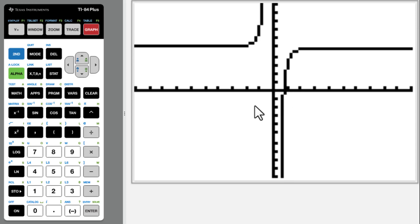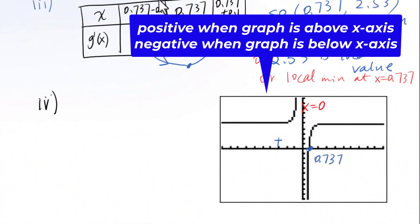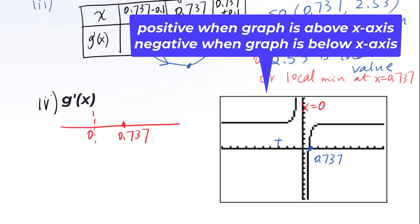Then remember x is not equal to 0. From this graph we could draw the sign diagram to figure out intervals for increasing and decreasing function. We know this point is 0.737. Vertical asymptote line. You have to draw this asymptote line in the sign diagram. This is 0. Then 0.737, above x-axis is positive. Below x-axis is negative. Then positive.